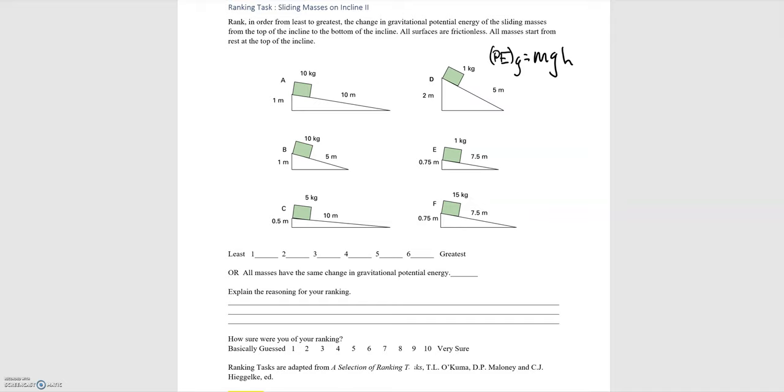We need to start by defining where the potential energy is zero. So what's our baseline value, and what we're going to want to do since we're asked to compare different situations is choose them all to have the same zero point for their potential energies.